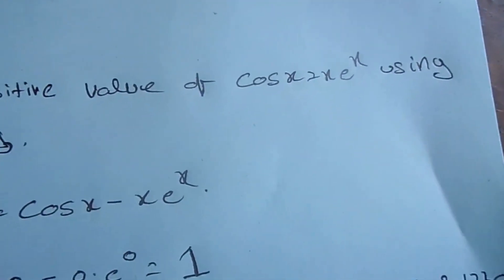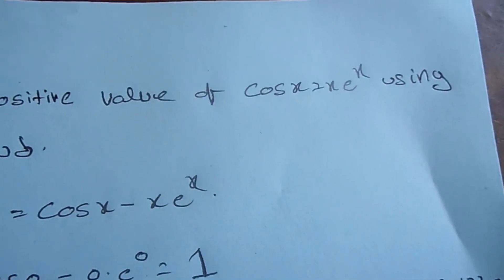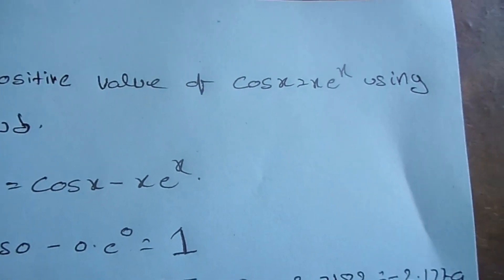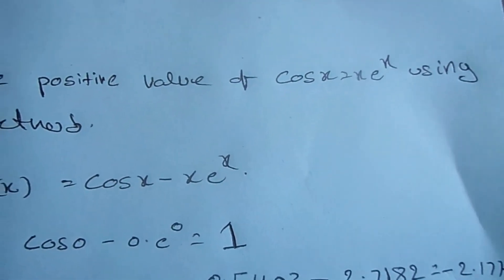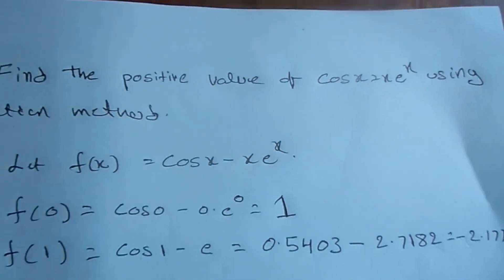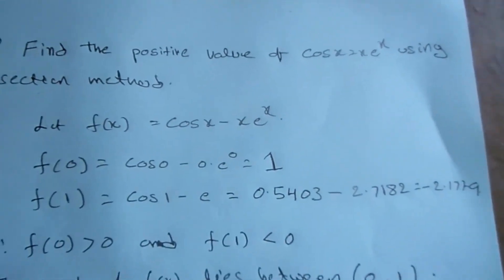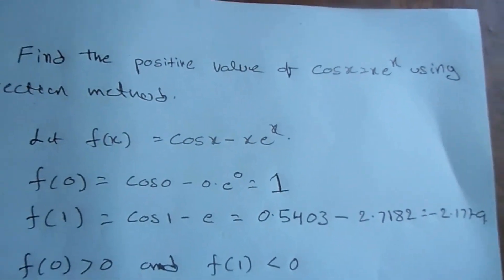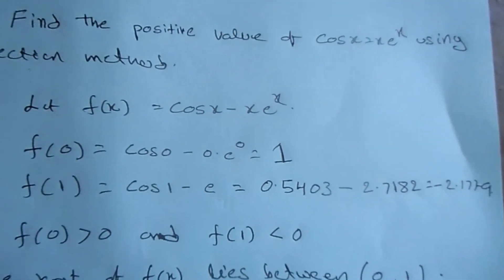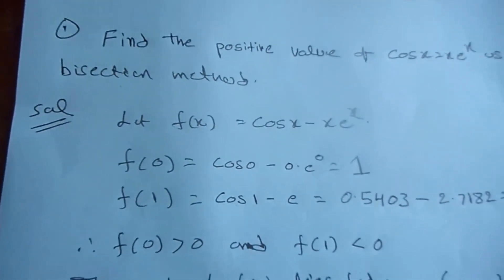For these types of problems — such as cos(x) = x·eˣ — most probably the answer lies between 0 and 1, or between 1 and 2, or 2 and 3.